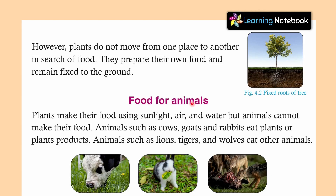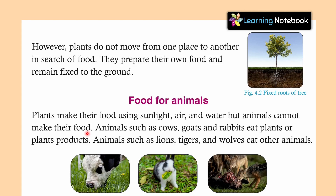Next is food for animals. Plants make their food using sunlight, air and water, but animals cannot make their food. जो plants हैं वो तो अपना खाना खुद बनाते हैं — sunlight, air and water use करके. पर जो animals होते हैं, वो अपना खाना खुद नहीं बना सकते. वो या तो plants पर dependent हैं अपने food के लिए, या दूसरे animals पर dependent हैं.